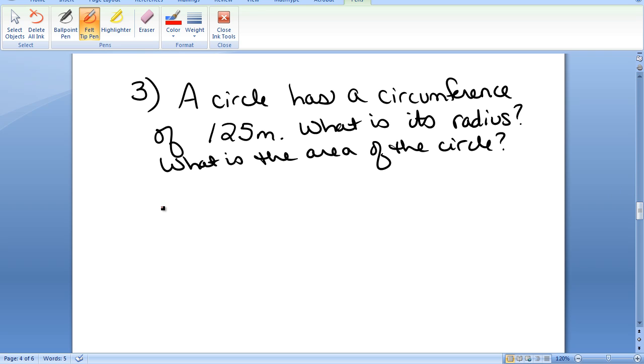A circle has a circumference of 125 meters. What is its radius and what is its area? So I'm going to draw my circle. Here is the radius r, and we're talking about the circumference of the circle. The formula involving the circumference is 2 times pi times r. We've been given the circumference is 125 meters, and that's equal to 2 times pi times r.